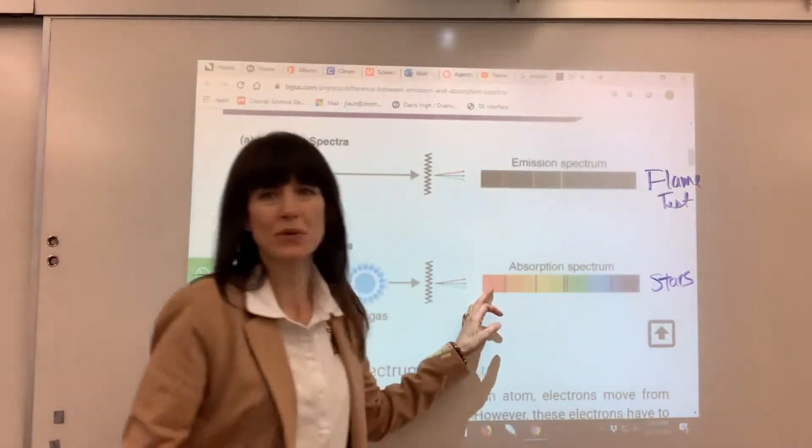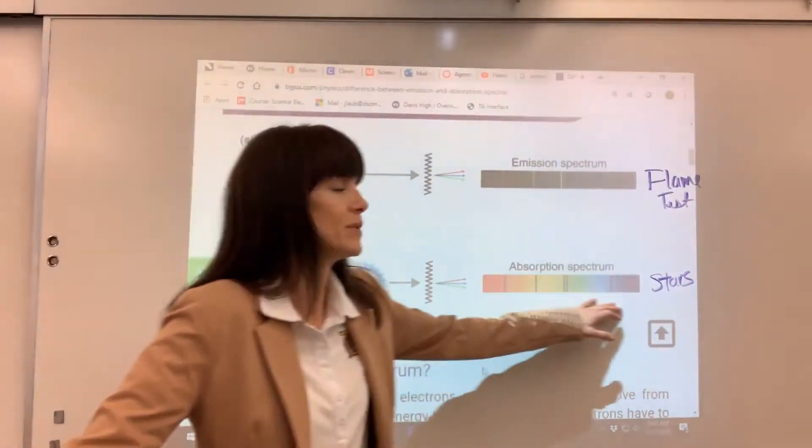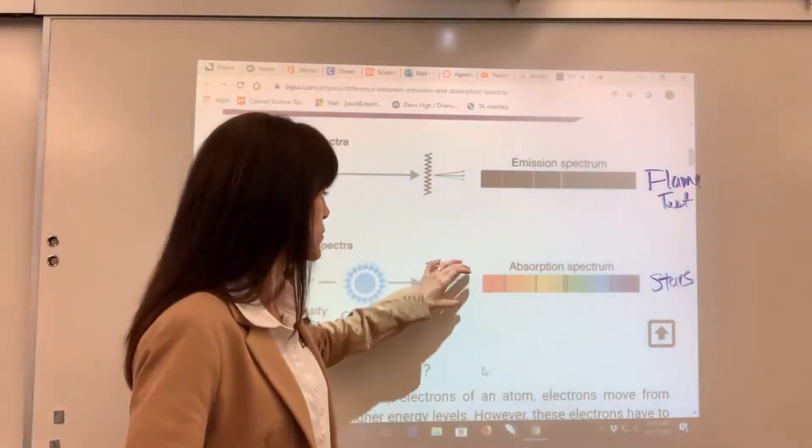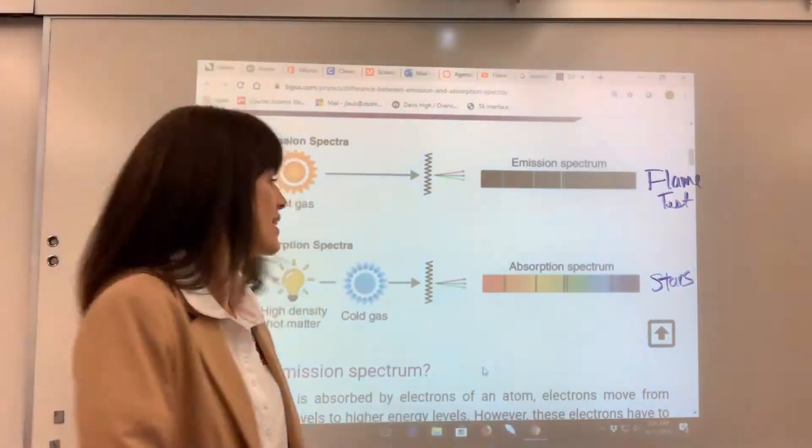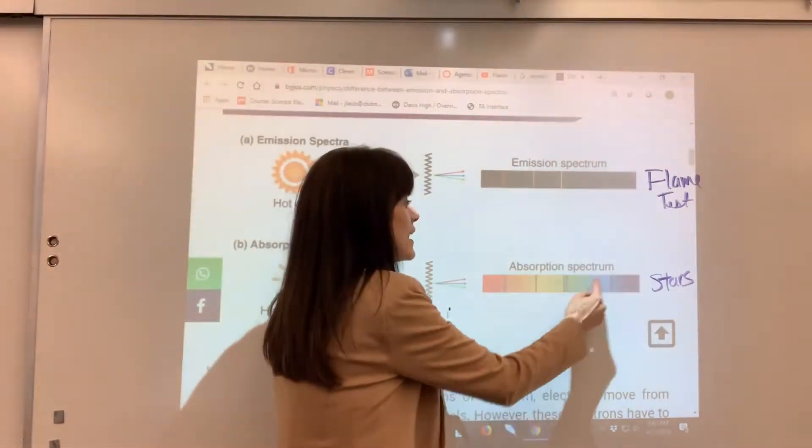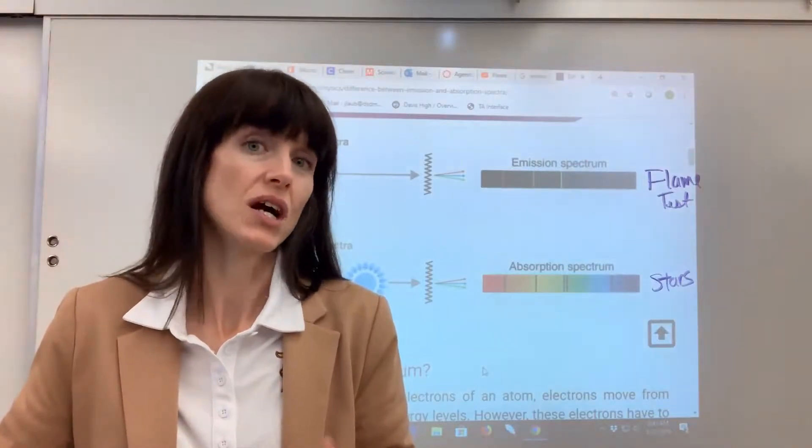Notice that beautiful rainbow right there. It's called a continuum right there that you see all of the rainbow, but then you'll notice some black lines. That's where the electrons are absorbing energy inside of a star.